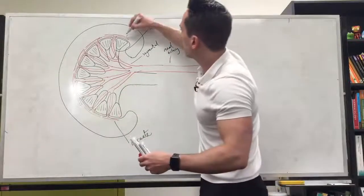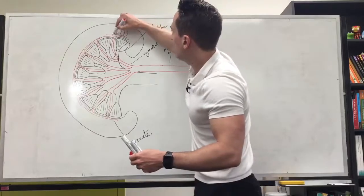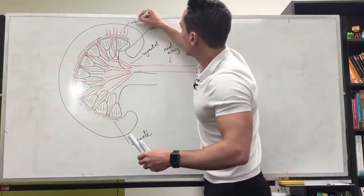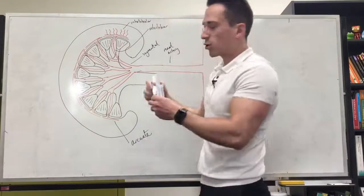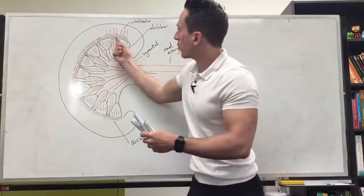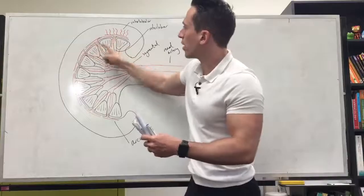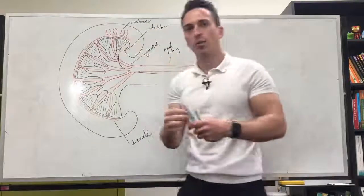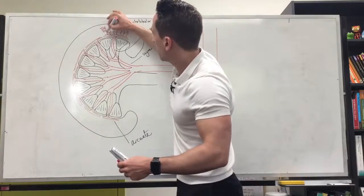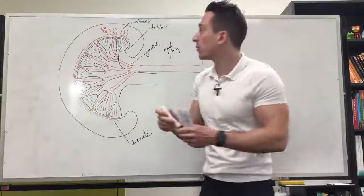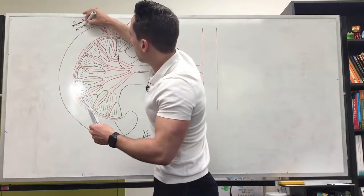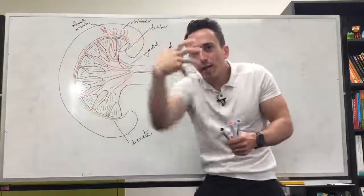The arcuate arteries give off more branches in the cortex, and these branches are called interlobular branches. So we've had interlobar — now we've got interlobular. The interlobular arteries have one more branch coming off, and these particular branches are called afferent arterioles.